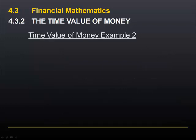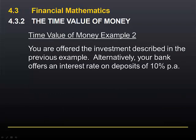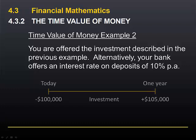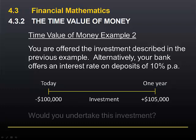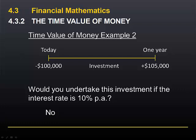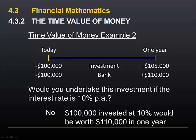Let's consider a different example. You are offered the same investment, but now we know that your bank is offering an interest rate of 10% per annum on deposits. Would you undertake this investment? In this case the answer is no. Clearly if you can earn $10,000 by putting your money in the bank, you would be worse off if you undertook this investment instead. Using the concept of the time value of money, we can say that if the interest rate is 10%, $100,000 today is equivalent to $110,000 in one year. The number of dollars is different, but the value is the same.